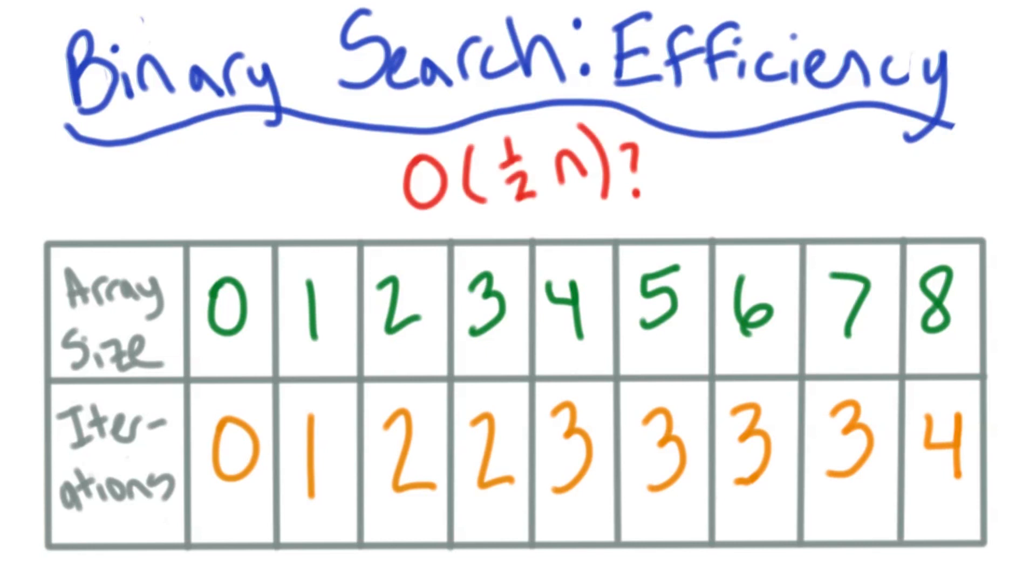Instead of counting the number of overall steps in the algorithm, I'm just counting the number of times I'll need to run the algorithm. In this case 4, when my n is 8.